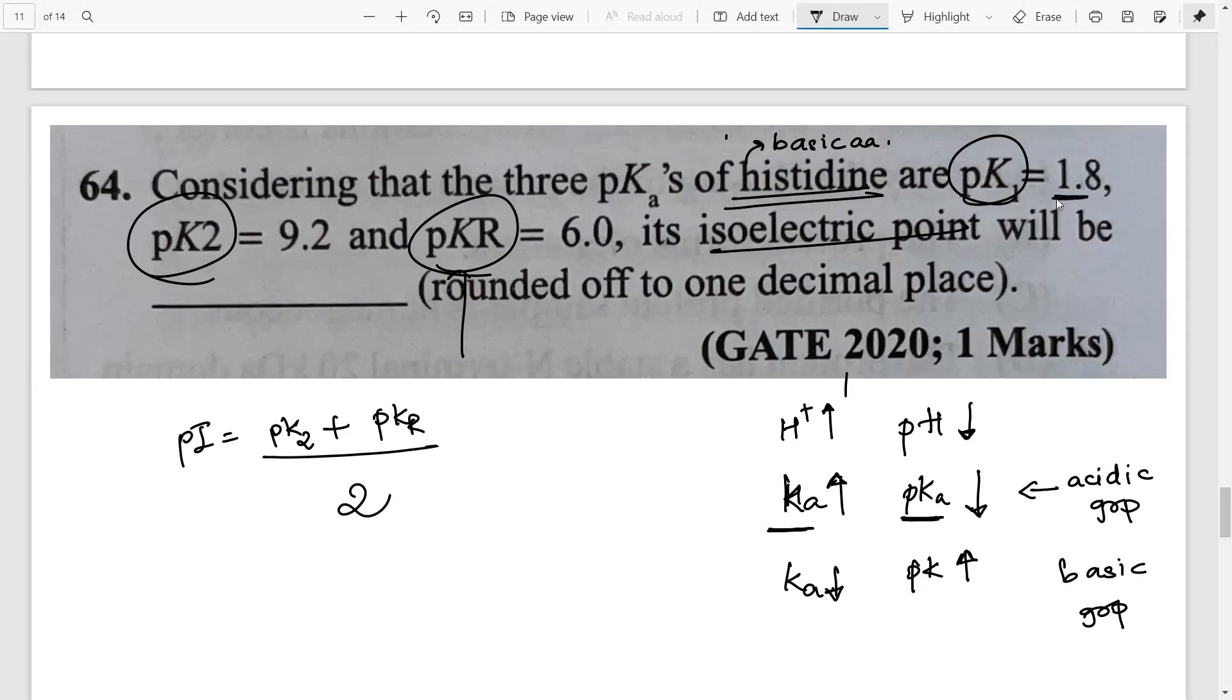So now in this case there is pK1 that is 1.8 and pK2 9.2. So definitely 1.8 is corresponding to the dissociation that is it's getting more and more dissociated. So that's the acidic group. So which one you will take? K2 because you know we are talking about the basic amino acid histidine. So that way you can easily calculate. So after this what you need to do is 9.2 plus 6 divided by 2. So if you calculate what you get is 15.2 divided by 2 that is nothing but 7.6. So your answer to this question is 7.6.